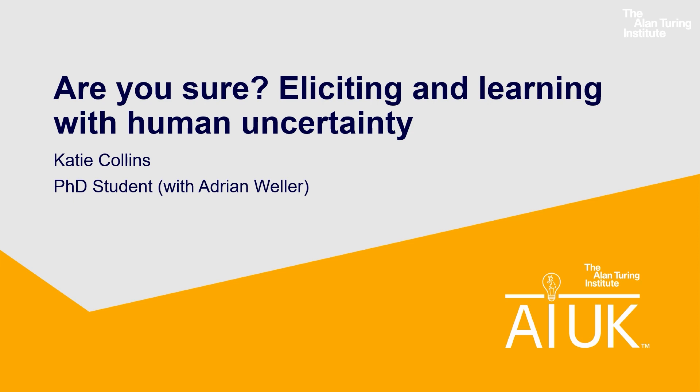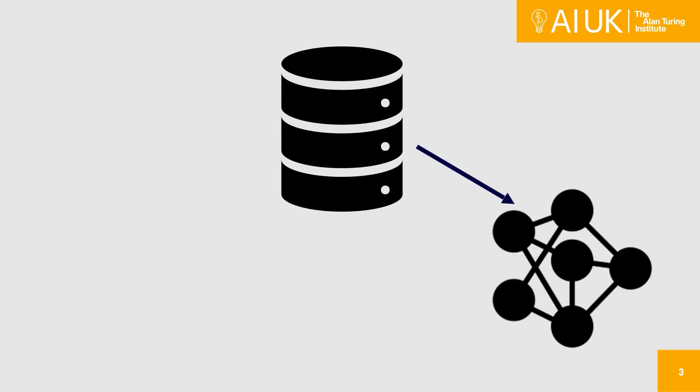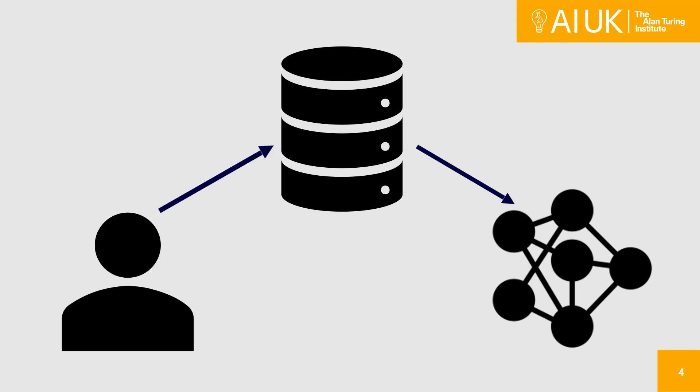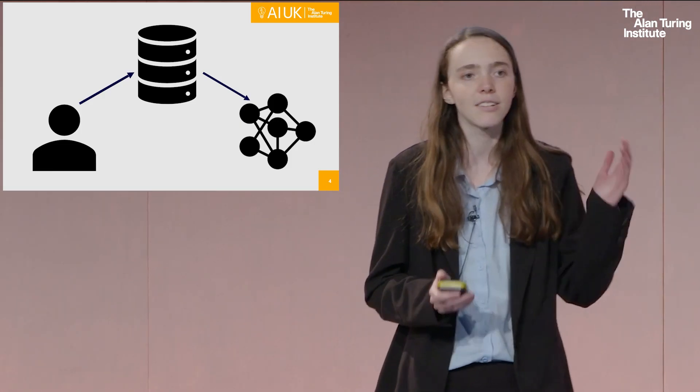Thank you for the kind introduction. I'm Katie, a PhD student at the University of Cambridge with Adrian Weller, and my goal for the talk today is to convince you that human uncertainty is valuable and important to capture and incorporate in ML systems. I want to start by talking about data — data is one of the key drivers of ML systems today. When we talk about supervised learning where we have labels for our data, these labels often come from human annotators, which might be crowdsourced workers, grad students in their room, or experts like doctors or lawyers.